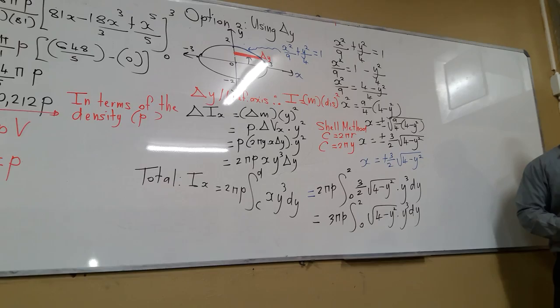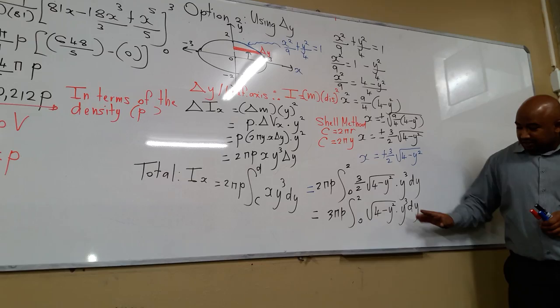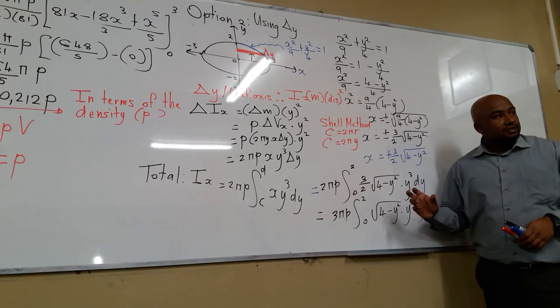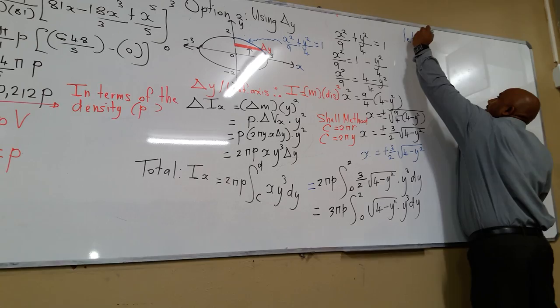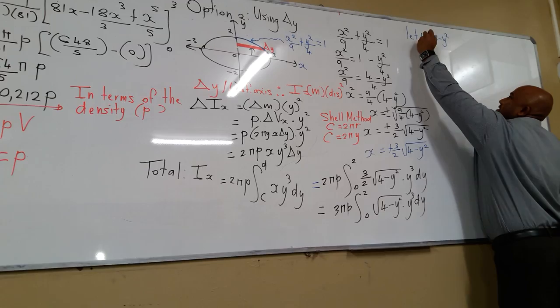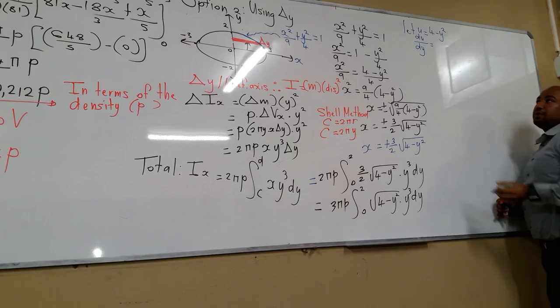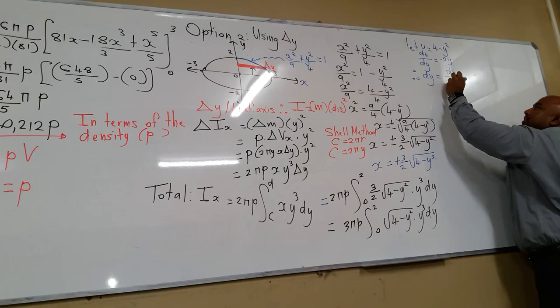We need to go back to our N5 special cases and use a u-substitution. Let u equal 4 minus y squared. Then du/dy equals minus 2y, so dy equals du divided by minus 2y.